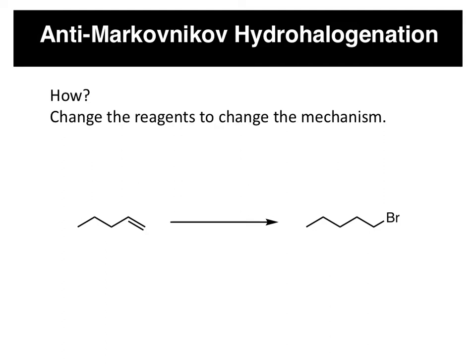And it only requires a subtle reagent change. We still use HBr, but we add peroxides. This could be something like hydrogen peroxide or another peroxide. What you want to look for is the O-O bond to designate a peroxide.